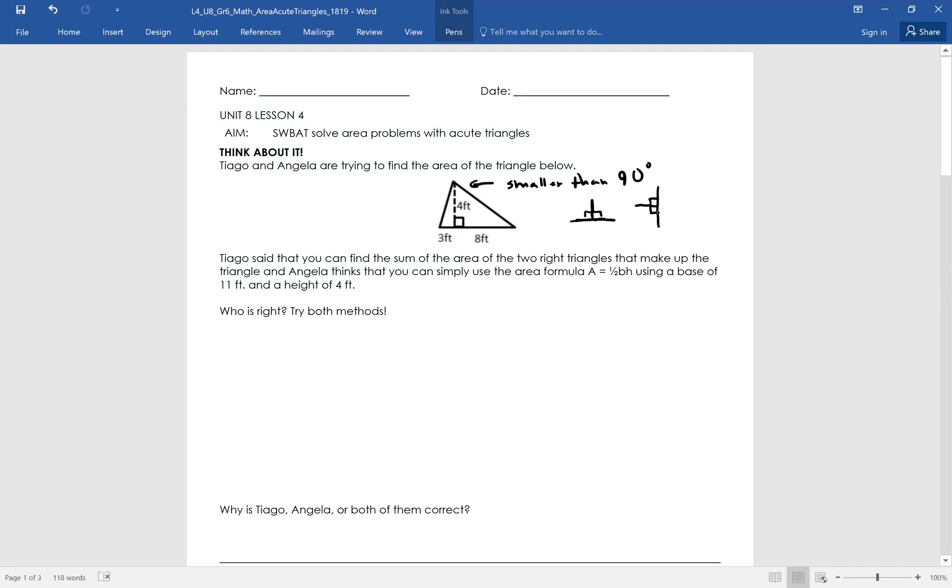Okay, so it says Tiago and Angela are trying to find the area of the triangle below. Cool. Tiago said that you can find the sum of the area of the two right triangles. It looks like it's two triangles, right? One triangle here and another triangle here. And that make up the triangle. And Angela thinks that you can simply use a formula like we used yesterday, A equals 1 half base height. Okay?